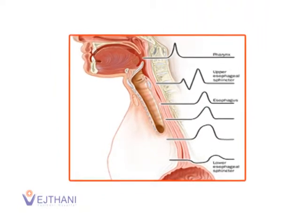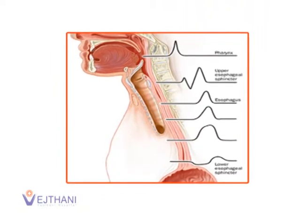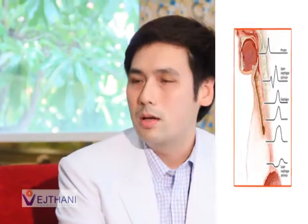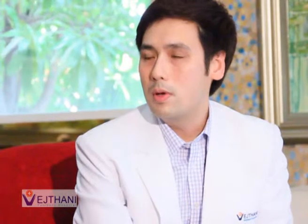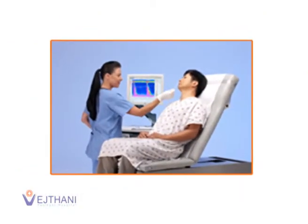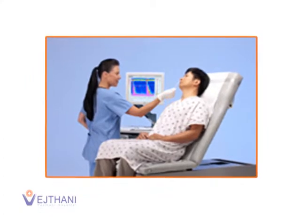For esophageal manometry, this is used to assess the pressure and the function of the esophageal body and esophageal sphincter. This is commonly given to patients who have a history of difficulty swallowing without obstruction, heartburn, and chest pain from non-cardiac causes. But for anorectal manometry, this is used to assess the pressure and the function of anorectal disease, especially in patients with chronic constipation or fecal incontinence.